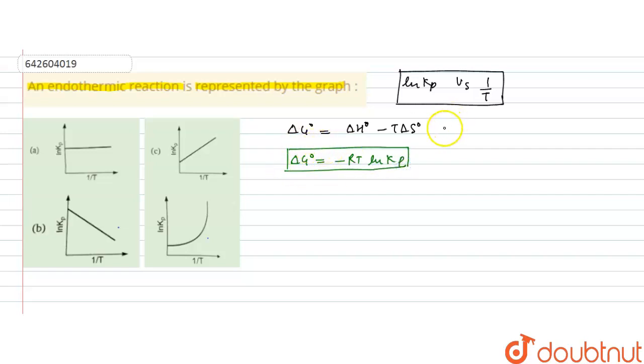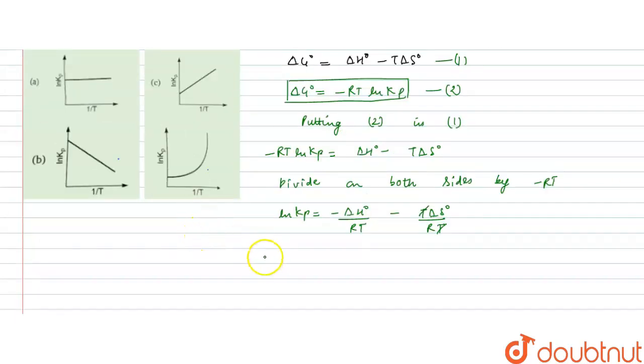Now if we put this value of delta G⁰ in equation 1, putting 2 in equation 1, it will become minus RT ln Kp equals delta H⁰ minus T delta S⁰. Now if we divide on both sides by minus RT, this will become ln Kp equals minus delta H⁰ by RT minus T delta S⁰ upon RT. This T is cancelled by T.